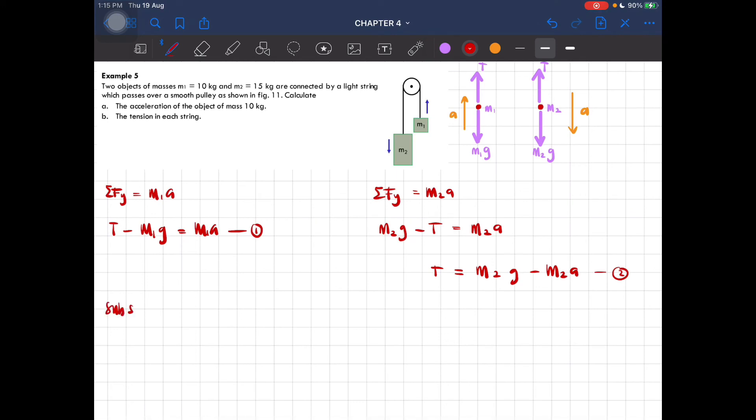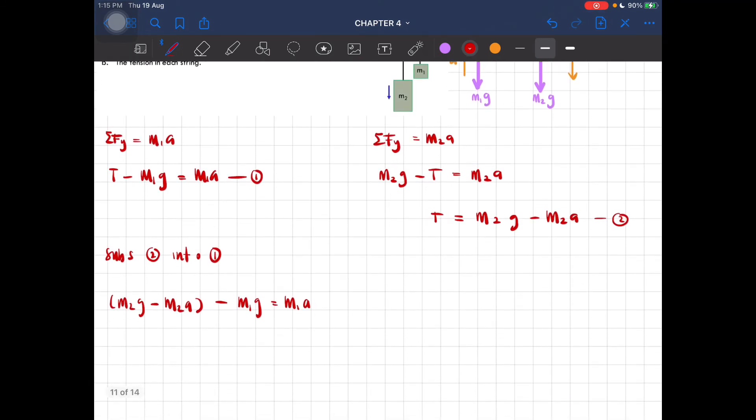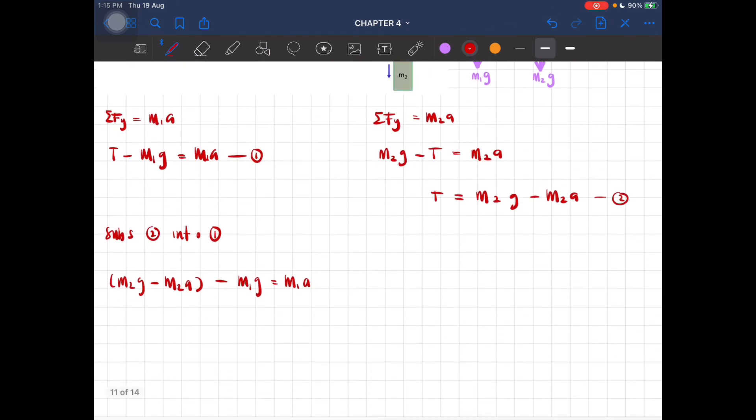Now we can substitute equation two into one to find the acceleration. So T is m2g minus m2a minus m1g equals m1a. From here you can rearrange and then you'll get the acceleration to be equal to 1.96 meters per second squared.